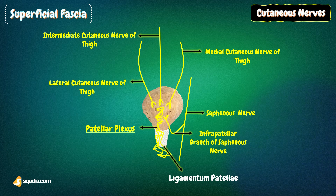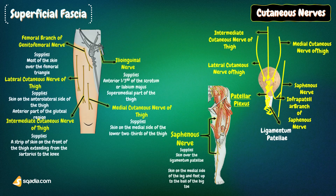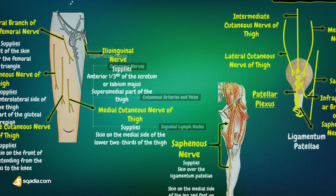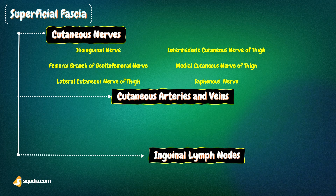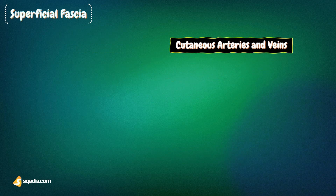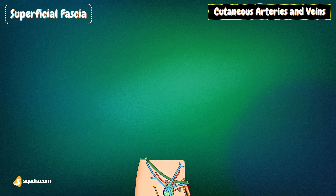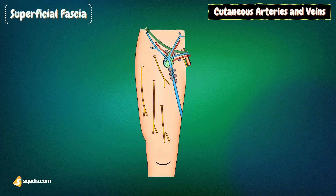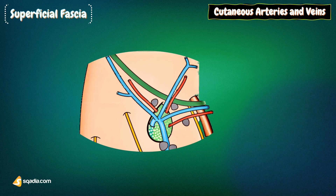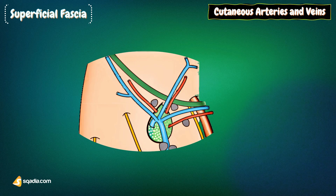That is all about the cutaneous nerve supply of the region of the thigh. Now we will look at the vasculature of the thigh, starting with the cutaneous arteries. Using the same illustration as the one showing the cutaneous nerves, here you can see the three small arteries arising from the femoral, a little below the inguinal ligament.